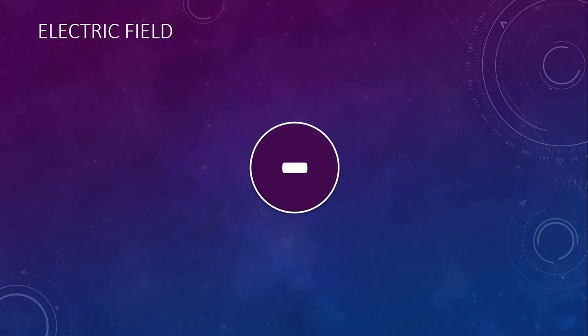Here's a negative object. And again, I want us to imagine that we're going to bring a second charged object nearby, and like before, we're going to imagine that it's a positive charge. If we put a positive charge below this, it'll feel a force up. If we put it above, it'll feel a force down. If we put it on the left, it'll feel a force to the right. If we put it on the right, it'll feel a force to the left. Any place we put this positive charge, it will feel a force toward our negative object.